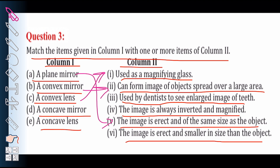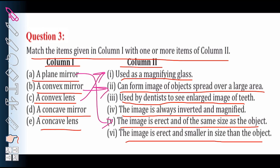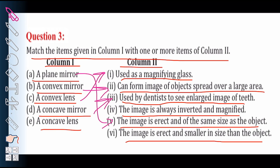A convex lens — its use is as a magnifying glass. A concave mirror — the correct option is: it is used by dentists to see an enlarged image of teeth. Dentists use a concave mirror so that they can see an enlarged view of the teeth. That is why they use a concave mirror. Last, a concave lens — the correct option is: the image is erect and smaller in size than the object.